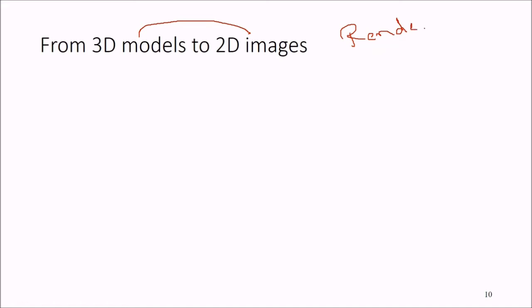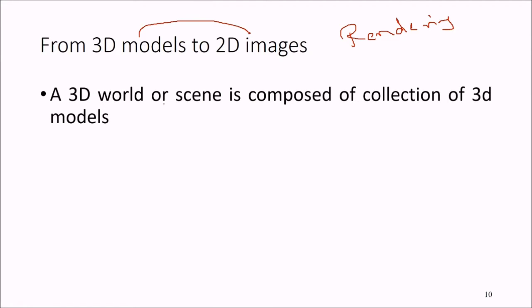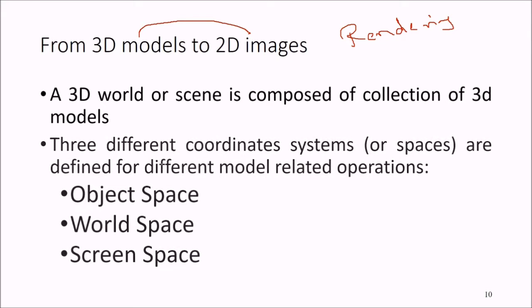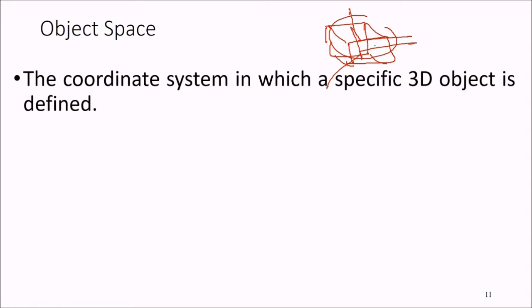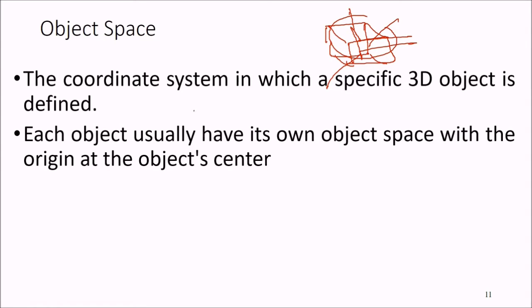Now, from 3D model to 2D image — the rendering concept. A 3D world or scene is composed of a collection of 3D models. Three different coordinate systems or spaces are defined for different model-related operations: first is object space, then world space, then screen space. Object space is the coordinate system in which a specific 3D object is defined, with the origin at the object center.